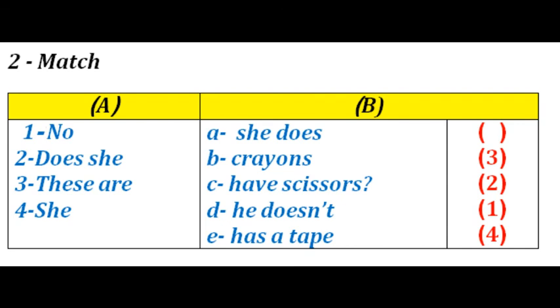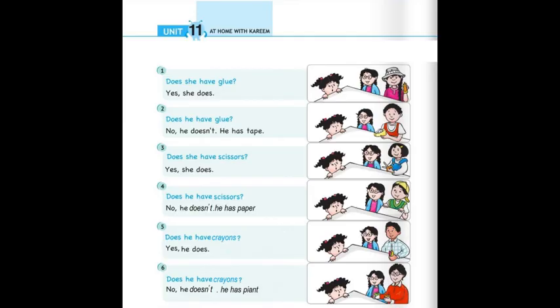Let's go back to the book, page 79. Letter B, I have questions here. Let's practice the grammar we took today. Number one: Does she have glue?